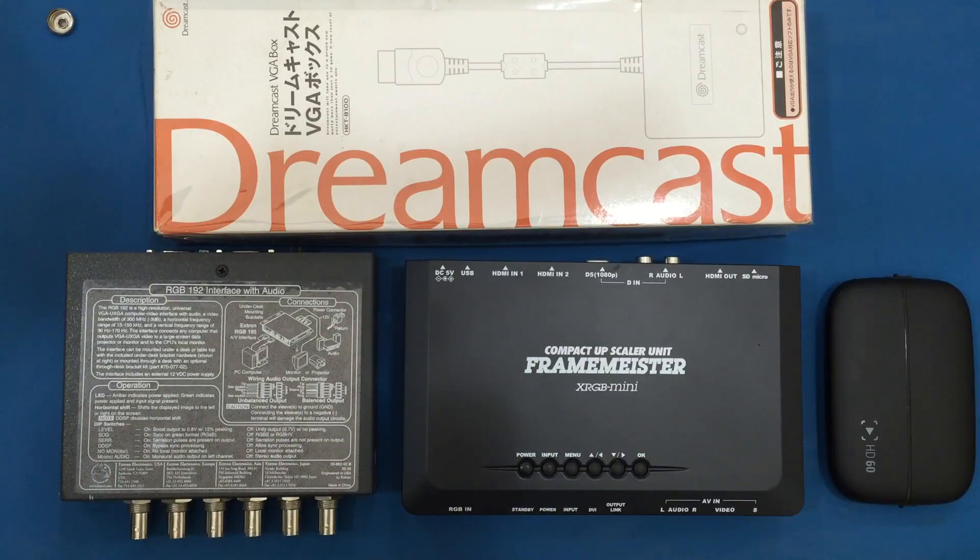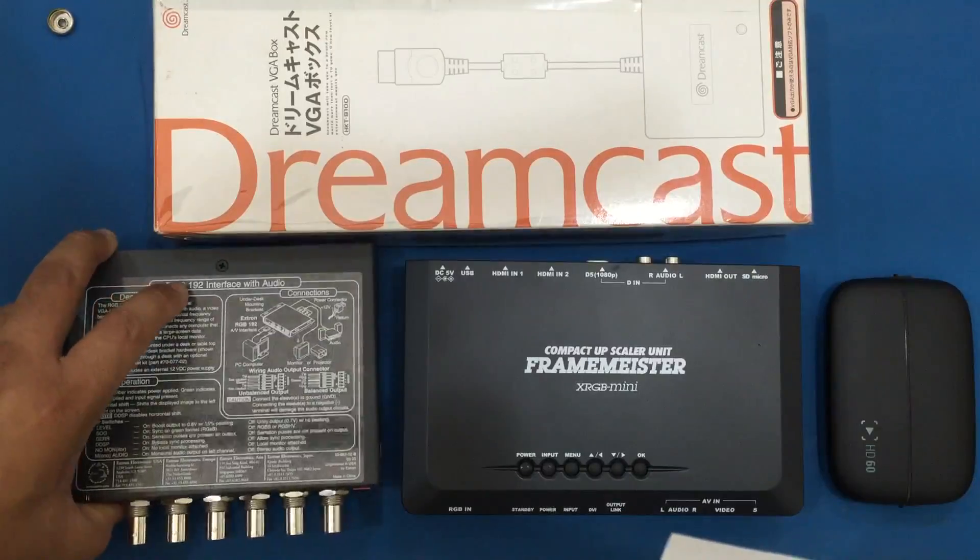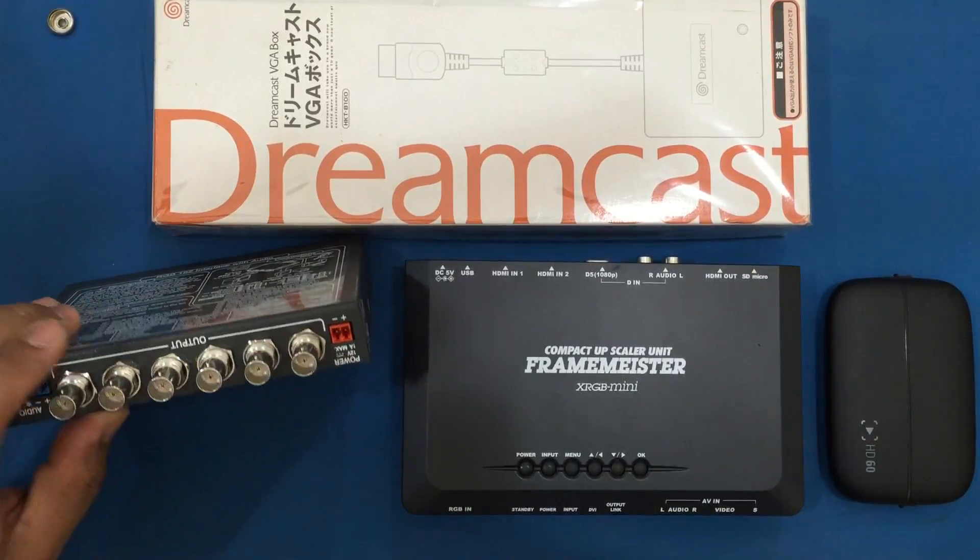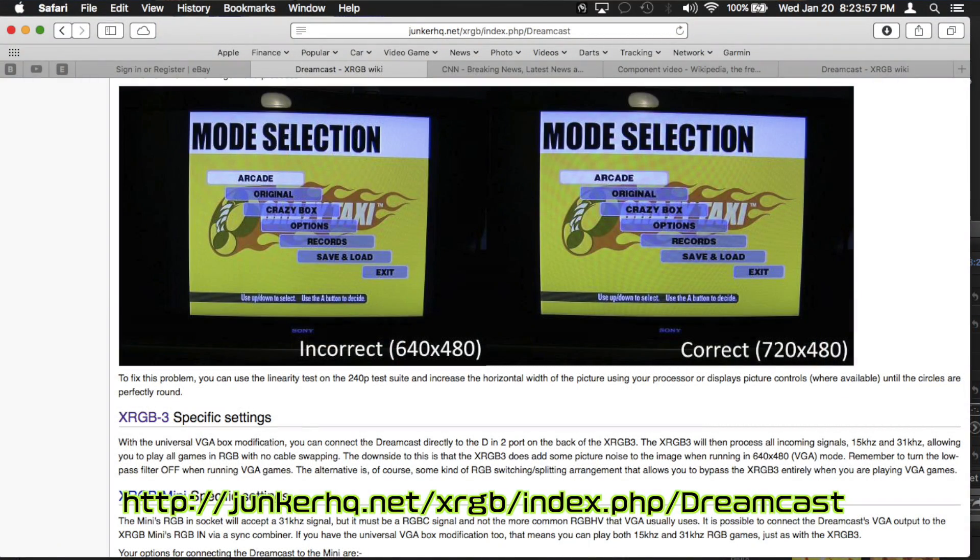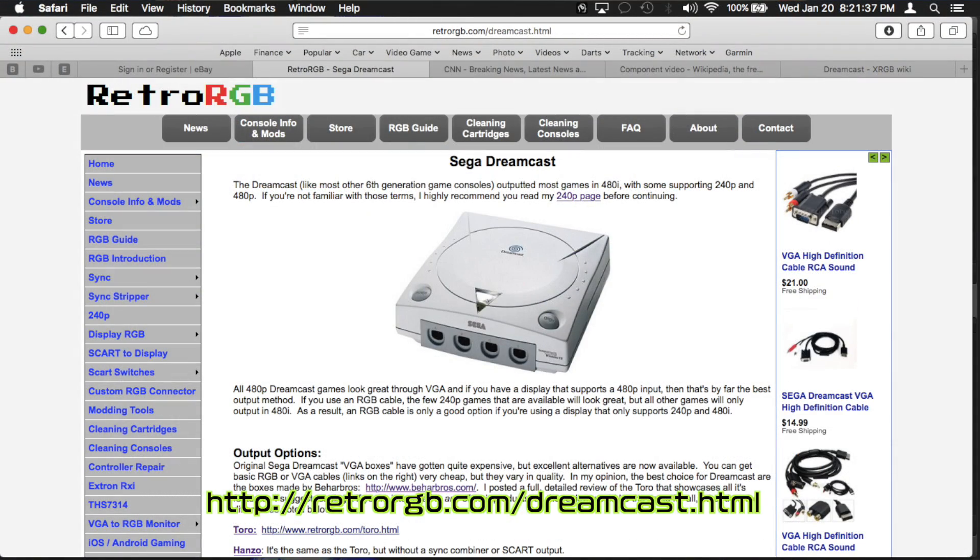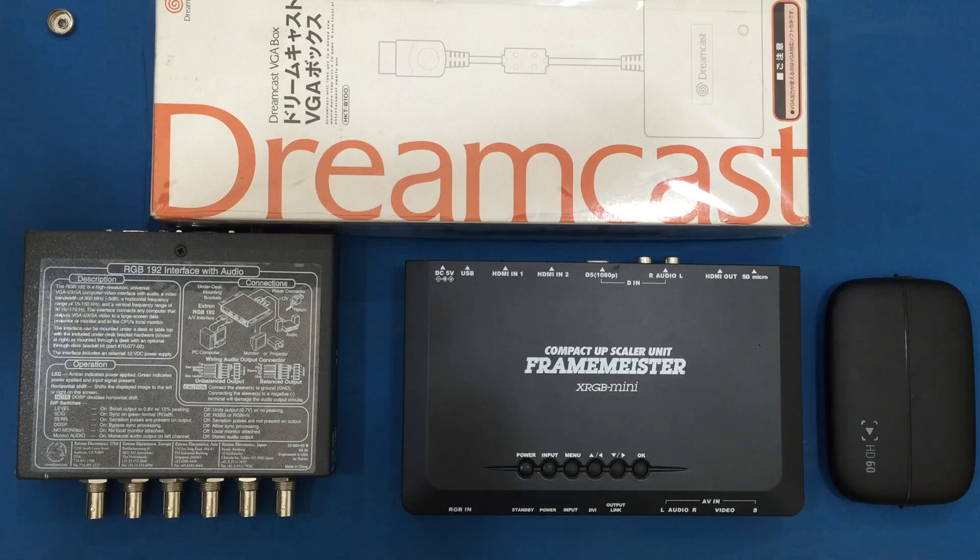This is where an RGB interface comes in. It produces a combined sync signal the Framemeister can use and I got this information from XRGBWiki and from RetroRGB. I recommend you head on over to familiarize yourself with the ins and outs of RGB.